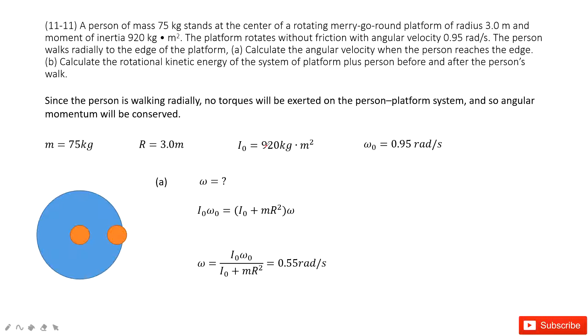In this chapter, we talk about angular momentum. In this system, we can see a person is standing at the center of a merry-go-round. The mass of the person is given, and also the radius of the merry-go-round and the initial moment of inertia is given.